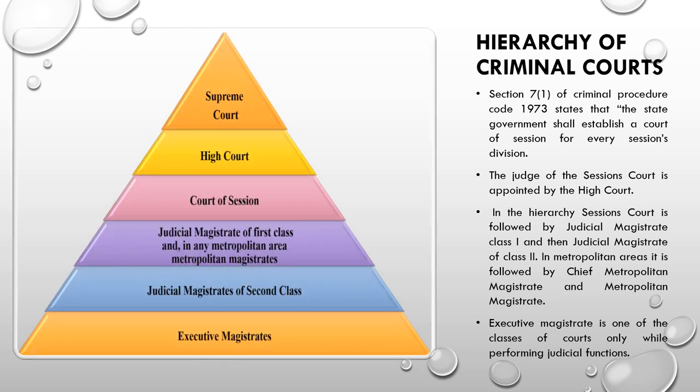Let's discuss the hierarchy of the Indian criminal courts. At the top there is the Supreme Court, second is the High Court, then the Court of Session, then the Judicial Magistrate of First Class — and in the metropolitan area they are called Metropolitan Magistrate — then Judicial Magistrate of Second Class, and there are Executive Magistrates also.